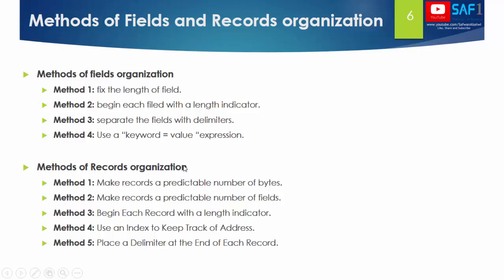For record organization, there are also several methods. The first is to make records a predictable number of bytes, for example each record is 10 bytes. The second is to make records a predictable number of fields, such as five or ten fields per record, known before writing begins. The third is to begin each record with a length indicator. The fourth is to use an index, with two files: one index file and the data file itself. The fifth is to place a delimiter at the end of each record.